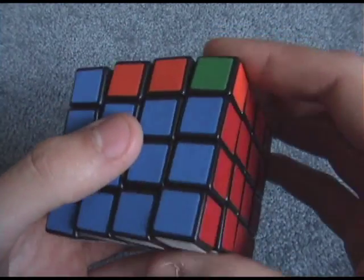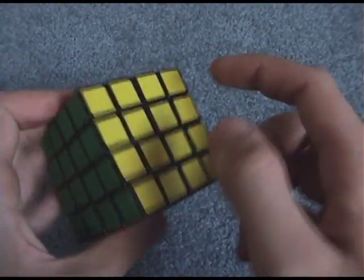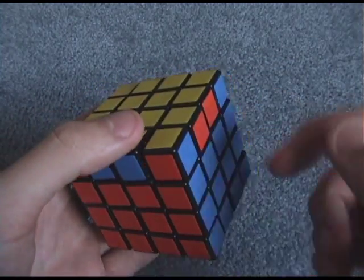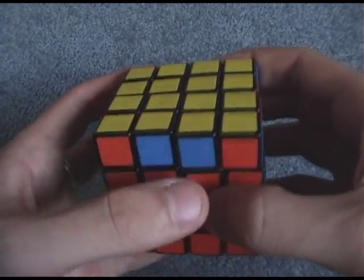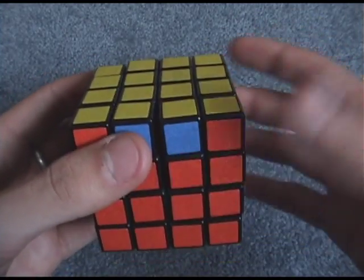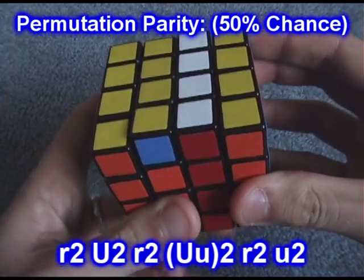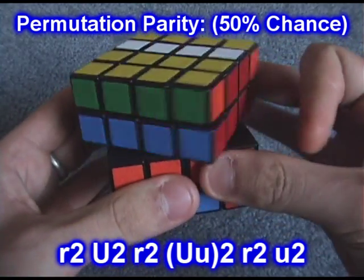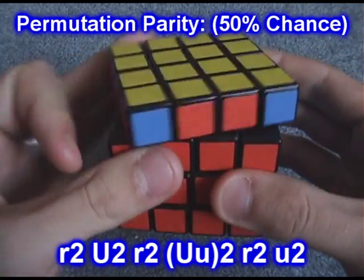So I'm just going to use my 2-step here. And you'll end up with a goofy case looking like this, where we have two edges that are switched. Now, any time you have this situation, two edges or two corners, or any PLL is not possible, you're going to use this very simple algorithm here. It's kind of similar to the H permutation on our 3x3. It's going to be a lowercase r2, u2, lowercase r2, lowercase u2, u2, lowercase r2, lowercase u2.